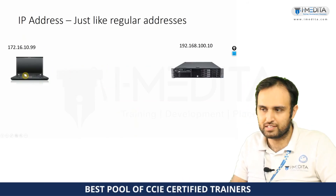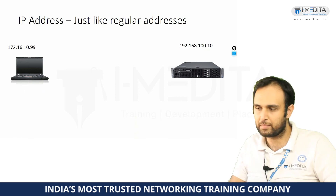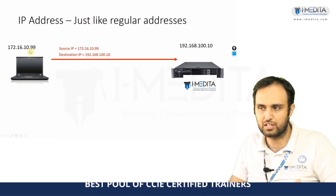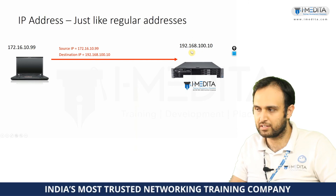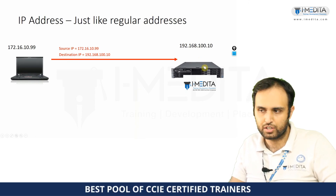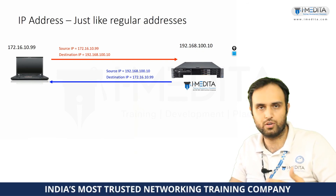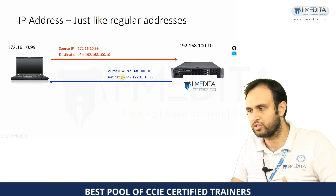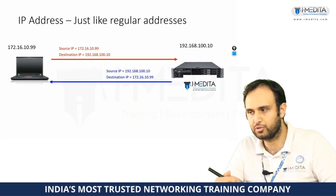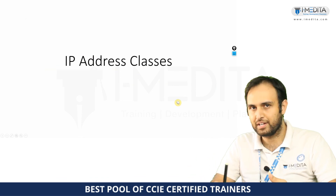Just like a regular address, suppose this laptop here wants to communicate with that server. When the laptop sends traffic, the source IP in the IP header will be 172.16.10.99 and the destination IP will be the server's address, 192.16.10.something. When return traffic comes from the server to the laptop, source IP is 192.16.100.10 and destination IP is 172.16.10.99. Just like sending a courier — you use your source address and the recipient's destination address. That's pretty much it about MAC address and IP address to begin with.